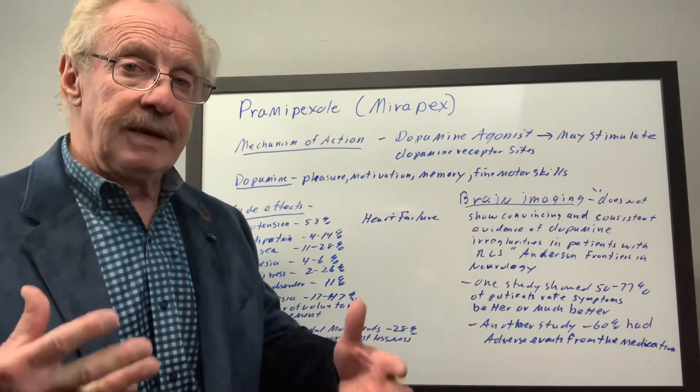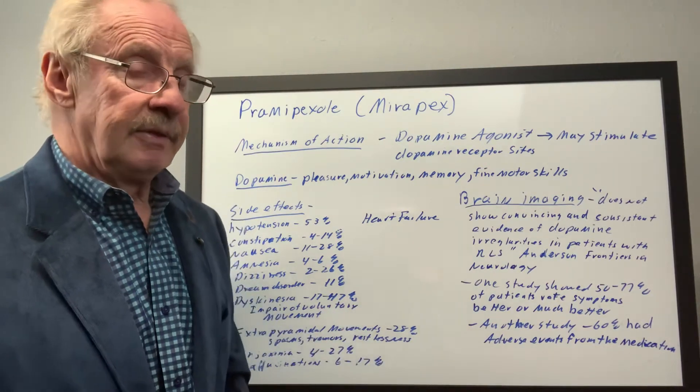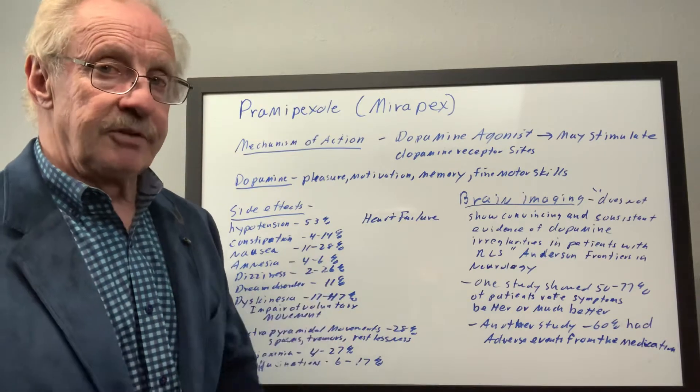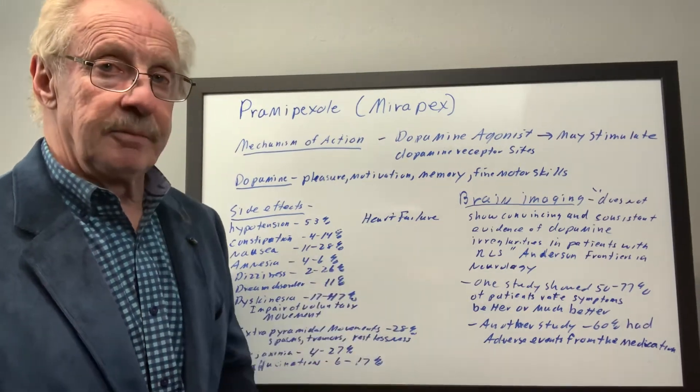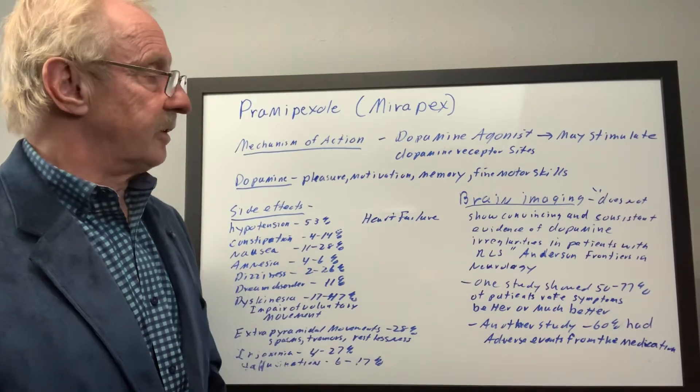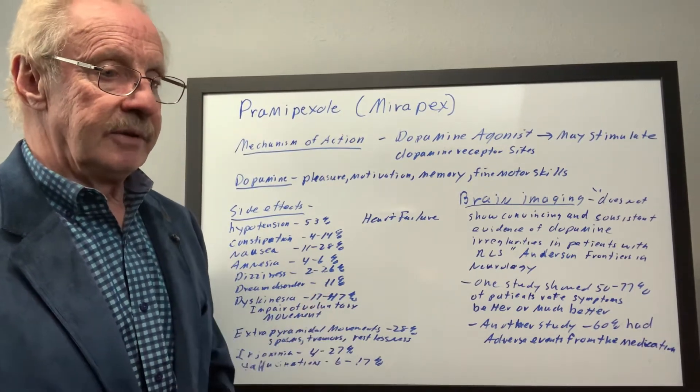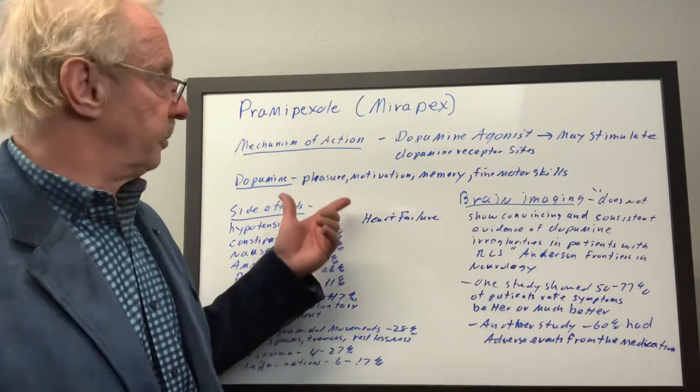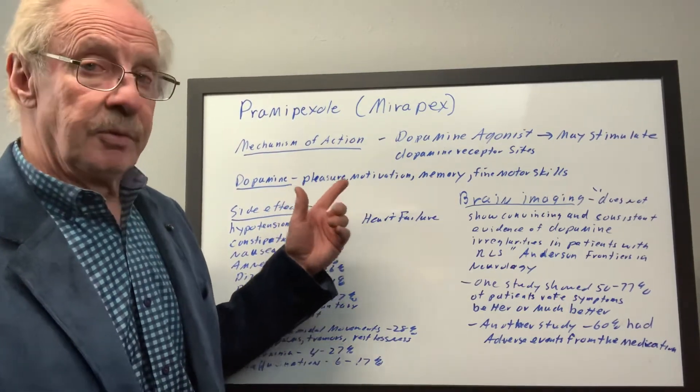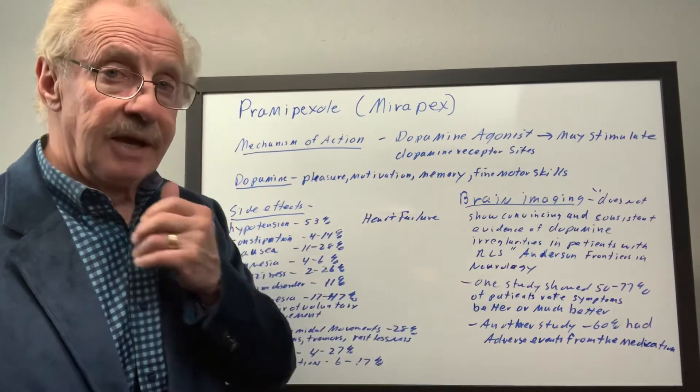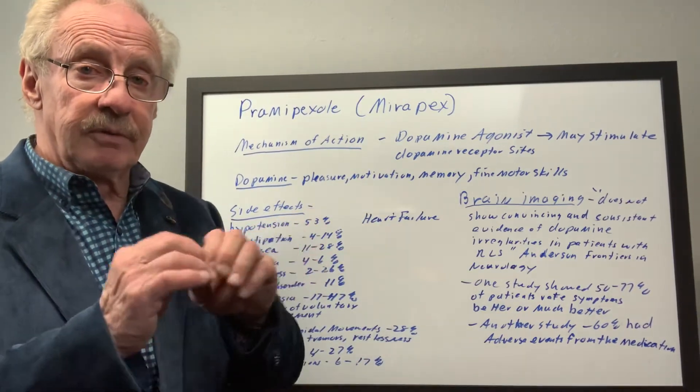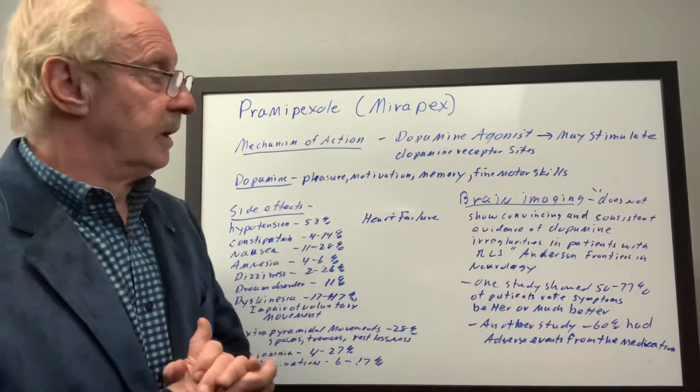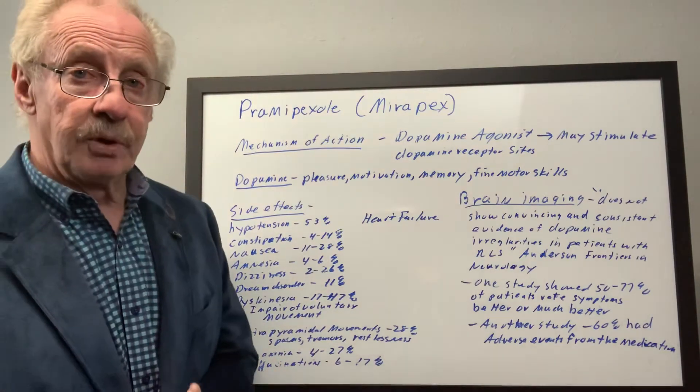In other words, dopamine is a neurotransmitter that gives you that pleasurable feeling, which we'll talk about in a minute, but this kind of acts as that, and so it stimulates more of the dopamine kind of response in the brain. Dopamine is responsible for the feeling of pleasure, for motivation, for memory, and for fine motor control, like when you're writing or maybe doing a drawing. That would be an example of fine motor control.